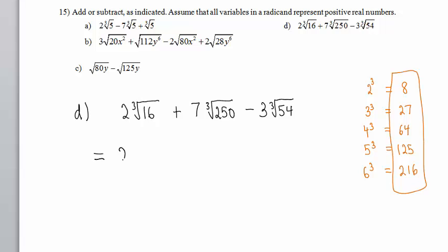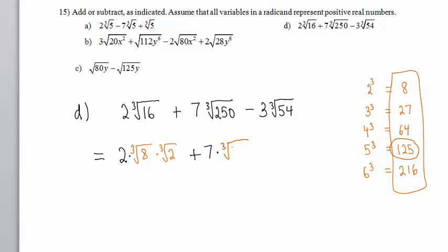In the first term, the perfect cube number that divides into 16 is 8. So we have the cube root of 8 times the cube root of 2, because 2 times 8 is 16. Bring down the plus 7 times. Which perfect cube number divides 250? The largest is 125. So we have cube root of 125 times cube root of 2, because 2 times 125 is 250. Bring down the minus 3 times. Which perfect cube divides into 54? The largest is 27. So we have cube root of 27 times cube root of 2.